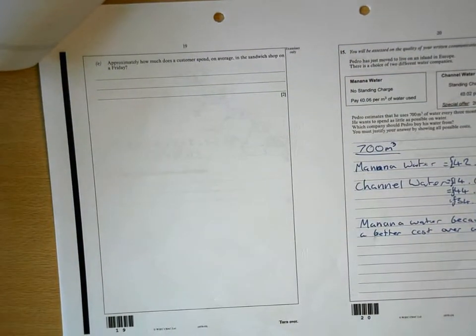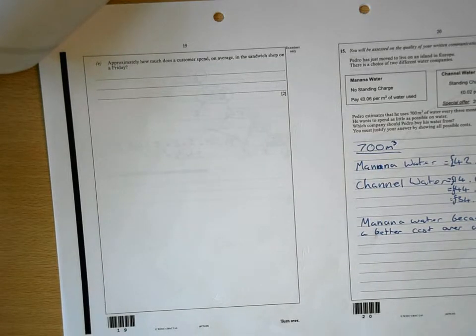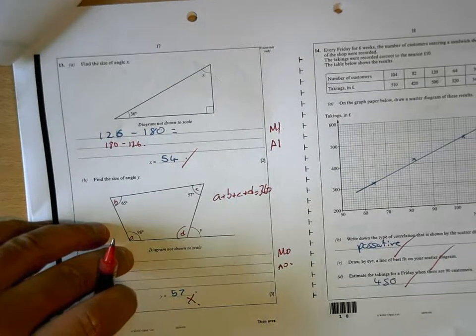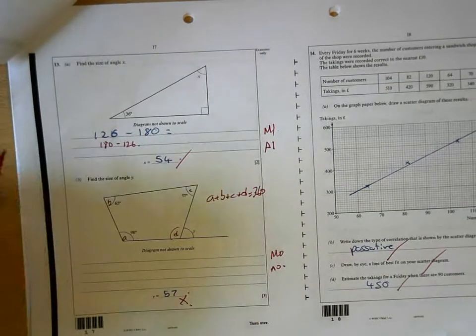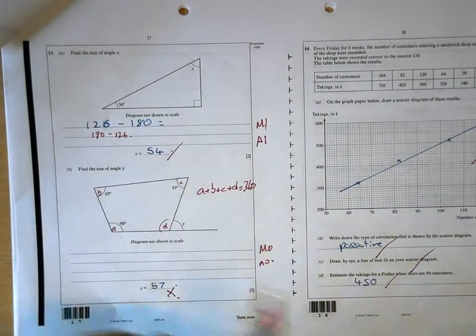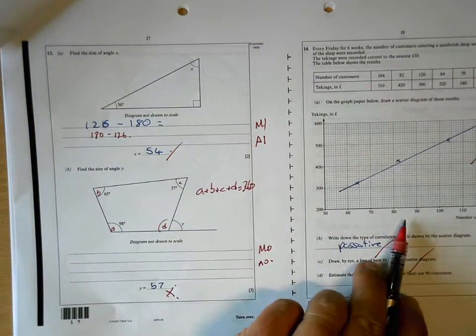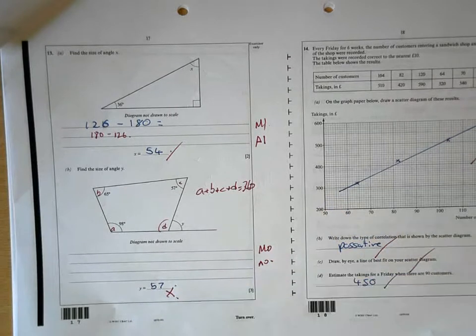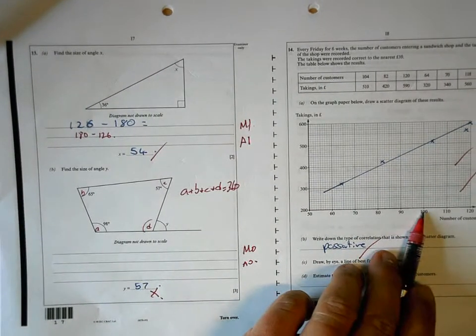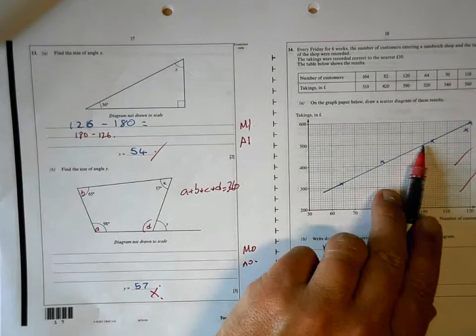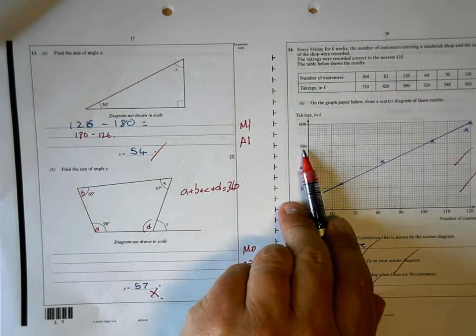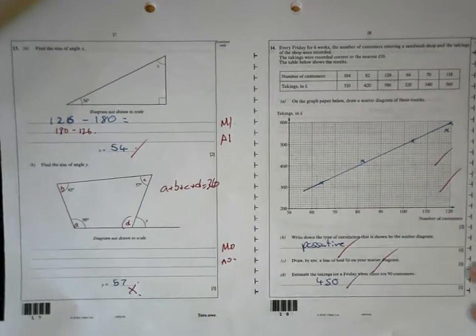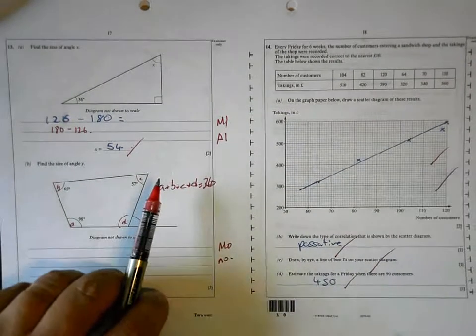Approximately how much does a customer spend on average in the sandwich shop on a Friday? What I would suggest you do there is again make life easier for yourself and find out what 60 customers do, and then to find one, you divide by 60. But the easiest one would be to find out what 100. So 100 customers on a Friday would spend 500 pounds. So you then divide the 500 by 100 to get roughly 5 pounds per person. So again, take a look at how I do that on the video.